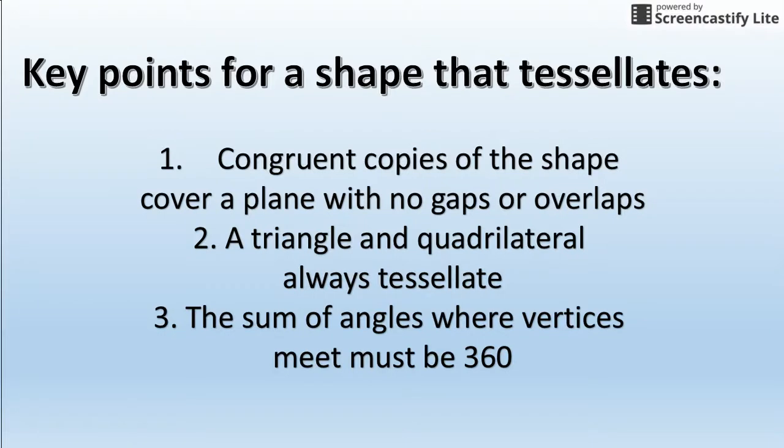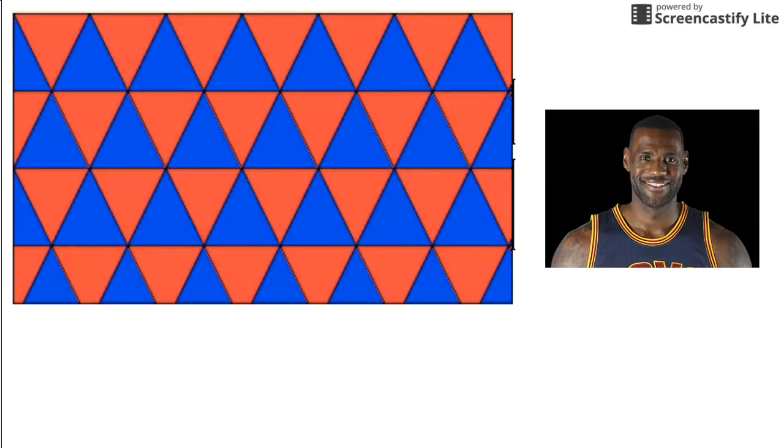Okay. Well, hey, let's look at what makes a shape tessellate or not. There are three things you should walk away from today's lesson knowing. One, congruent copies of the shape need to cover a plane with no gaps or overlaps. So, LeBron here said that's tessellated, and he is correct, because if you look, there are no gaps and there's no overlaps. This triangle just tessellates, or is congruent copies of it, and it does not overlap.